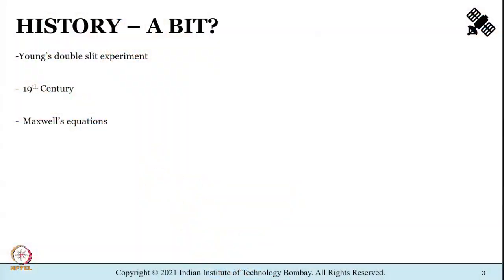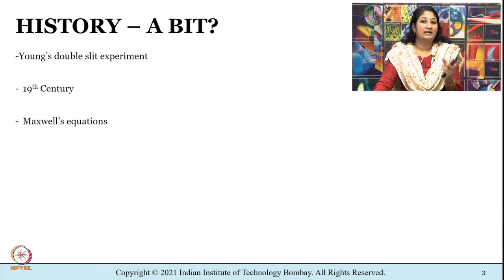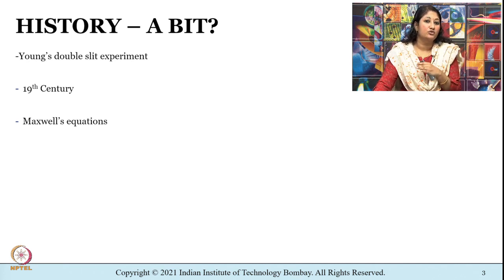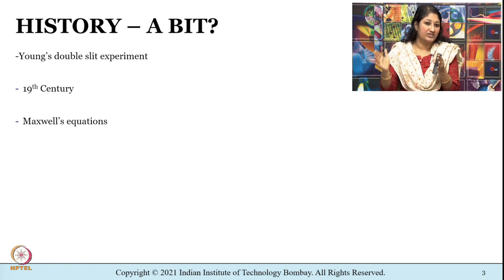These ideas laid the foundation for the development of color photography and color displays. In the 18th century, Young demonstrated the wave theory of light, now known as the double slit experiment. Light from a single color source was allowed to pass through a narrow slit, then directed through two more slits placed centimeters apart. The resulting light fell on a screen, producing bright and dark bands — the first demonstration of the interference of light.